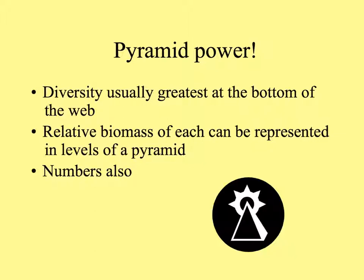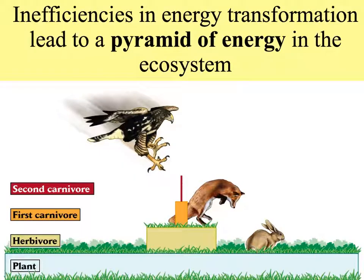In any food web, diversity is usually greatest at the bottom where the primary production is taking place, although this isn't always true in aquatic systems. The relative biomass of each level can be represented in a pyramid. Not only biomass but numbers also occur in a pyramid.